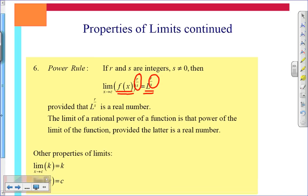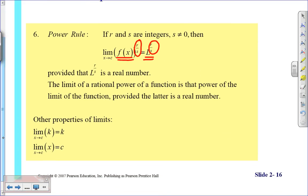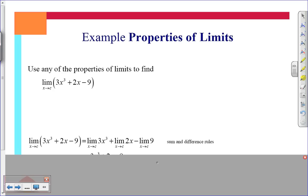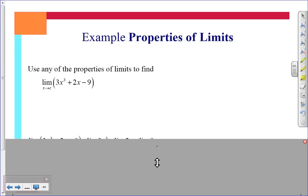And the last properties here stated at the bottom is just that if I have a limit as x approaches c of a constant, the solution, the limit, will be that constant. Or if I have the limit as x approaches c of the function x, it will be that constant. So let's look at a couple examples when the limits are applied. And you're going to notice that you do these naturally.